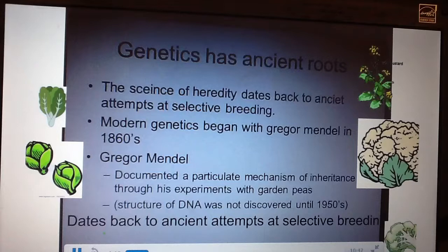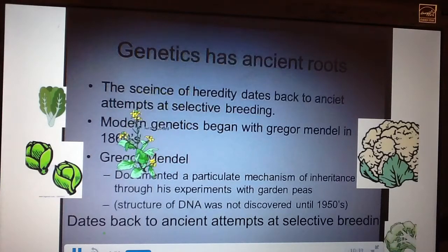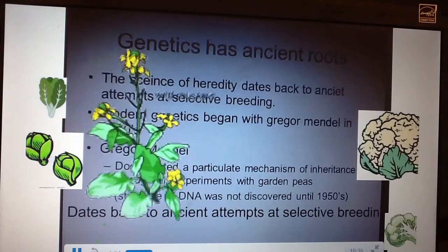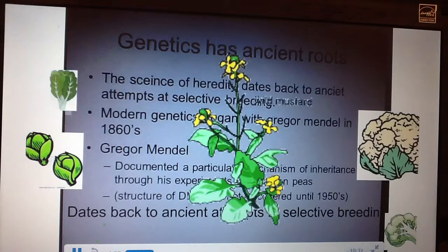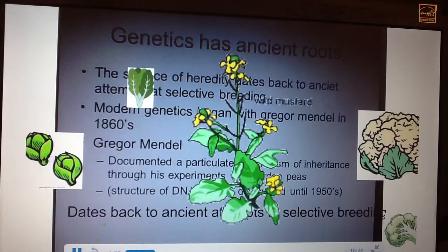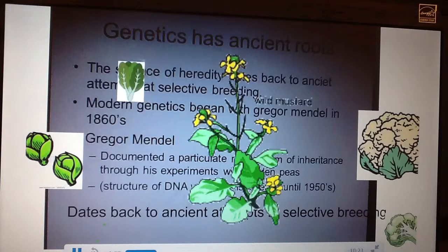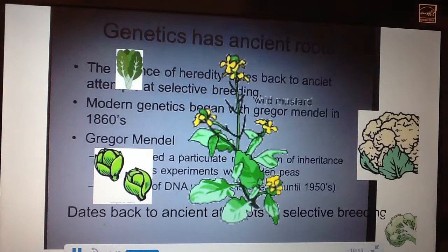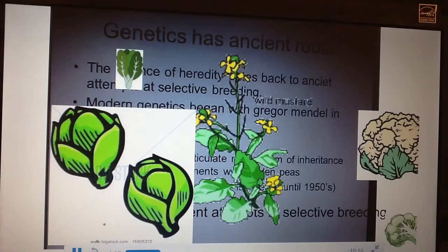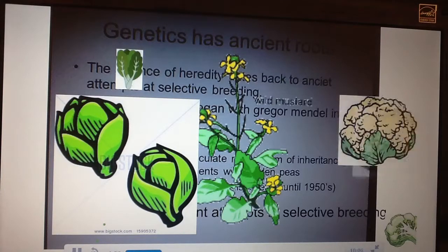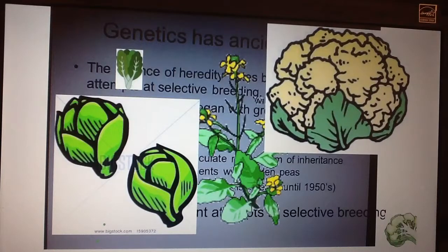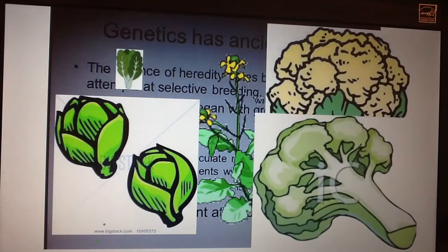Some of the best documented attempts of selective breeding were farmers working with wild mustard plants. If we selectively bred wild mustard for plants with large leaves, we get what is now known as kale. Breeding for very short node length — meaning the stems are very close together — produces Brussels sprouts. Preventing flowers from forming produces cauliflower or broccoli. By selectively selecting for certain traits in wild mustard, we were able to artificially produce a wide variety of different crops.